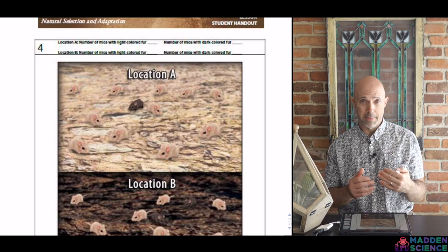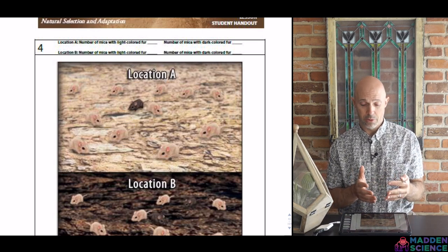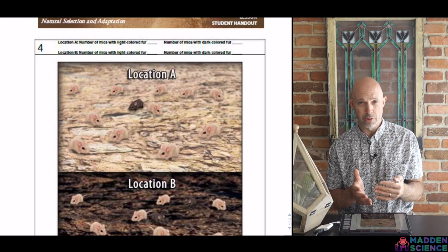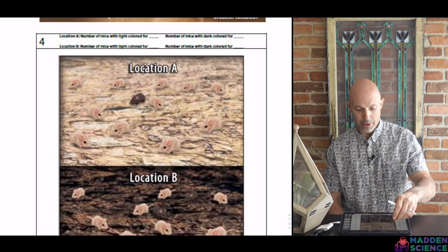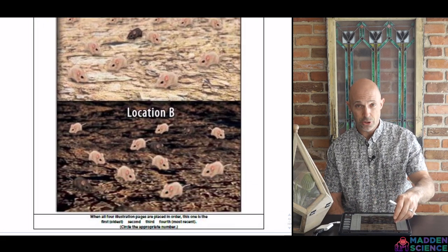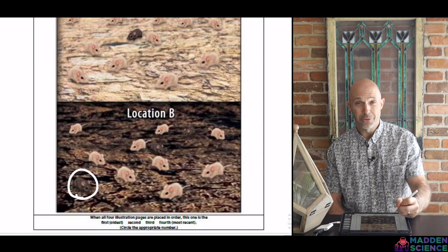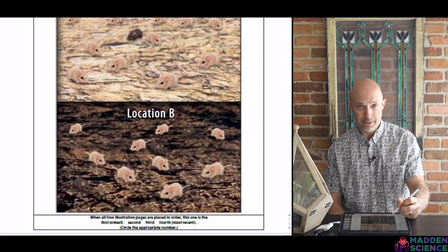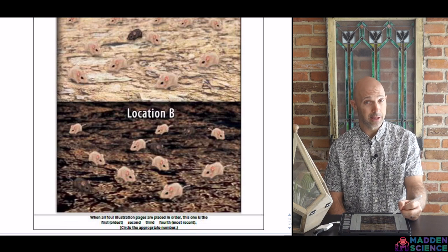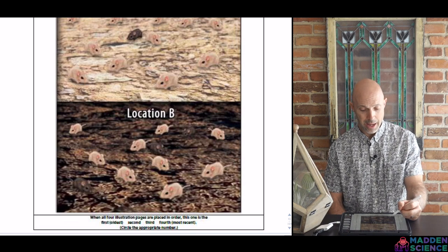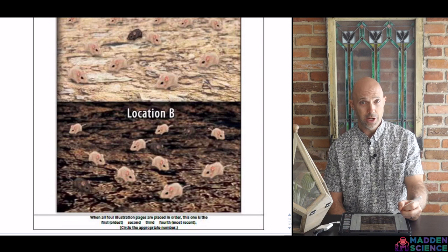Then there was an environmental event — an environmental pressure — where there was a change due to volcanic eruption, and the ground color changed, becoming much darker. Now the dark coated mice have the advantage: they're more camouflaged, less likely to get eaten. So you get a slow but consistent change in that population — a change in the allelic frequency. The dark ones went up and the light colored ones went down.